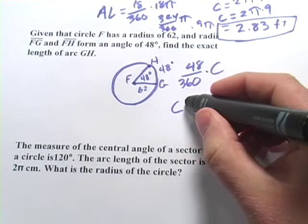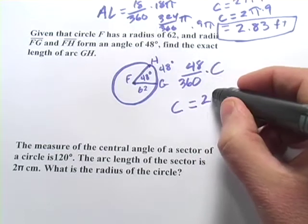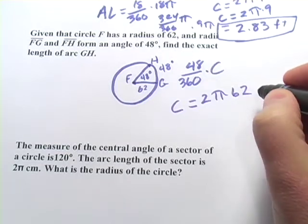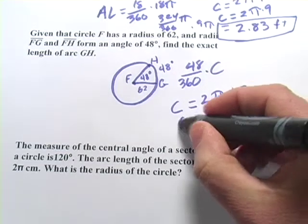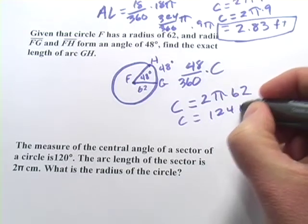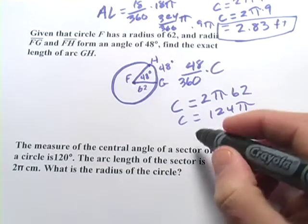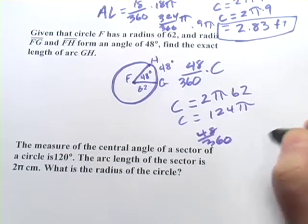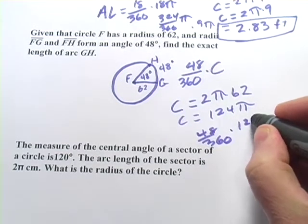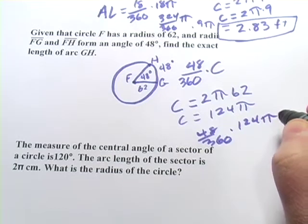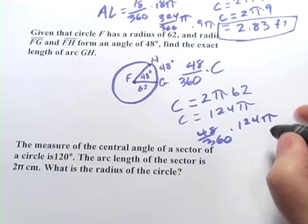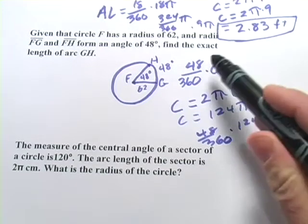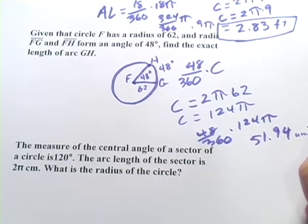So our circumference equals 2 times π times the radius. The radius here is 62, so we get circumference equals 124π. And we would get our arc length equaling 48 over 360 times 124π. And if you crunch the numbers on that, plug that all into your calculator, I think you're going to get 51.94. And let's see, they didn't give us any units there, we'll just say units.